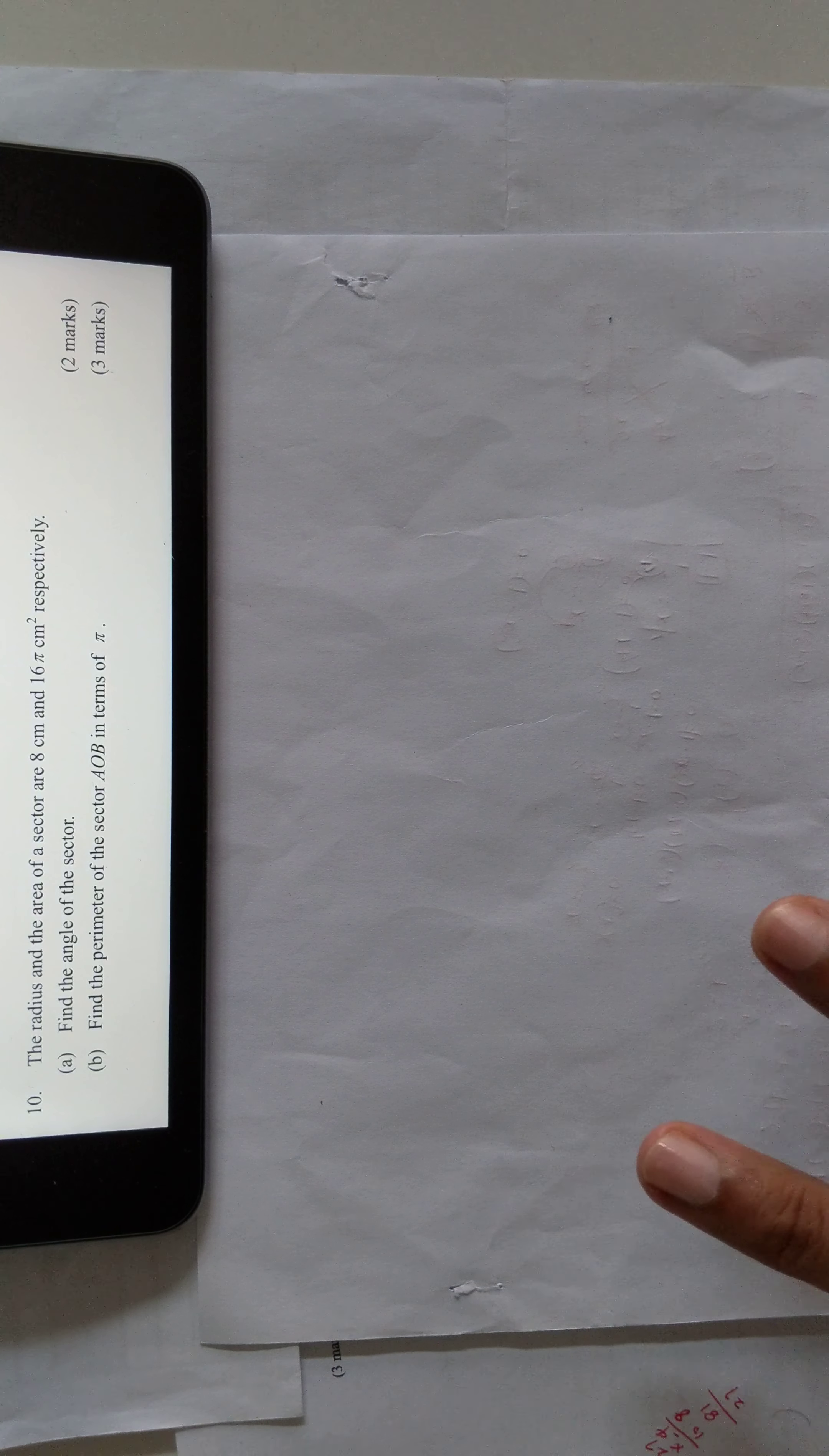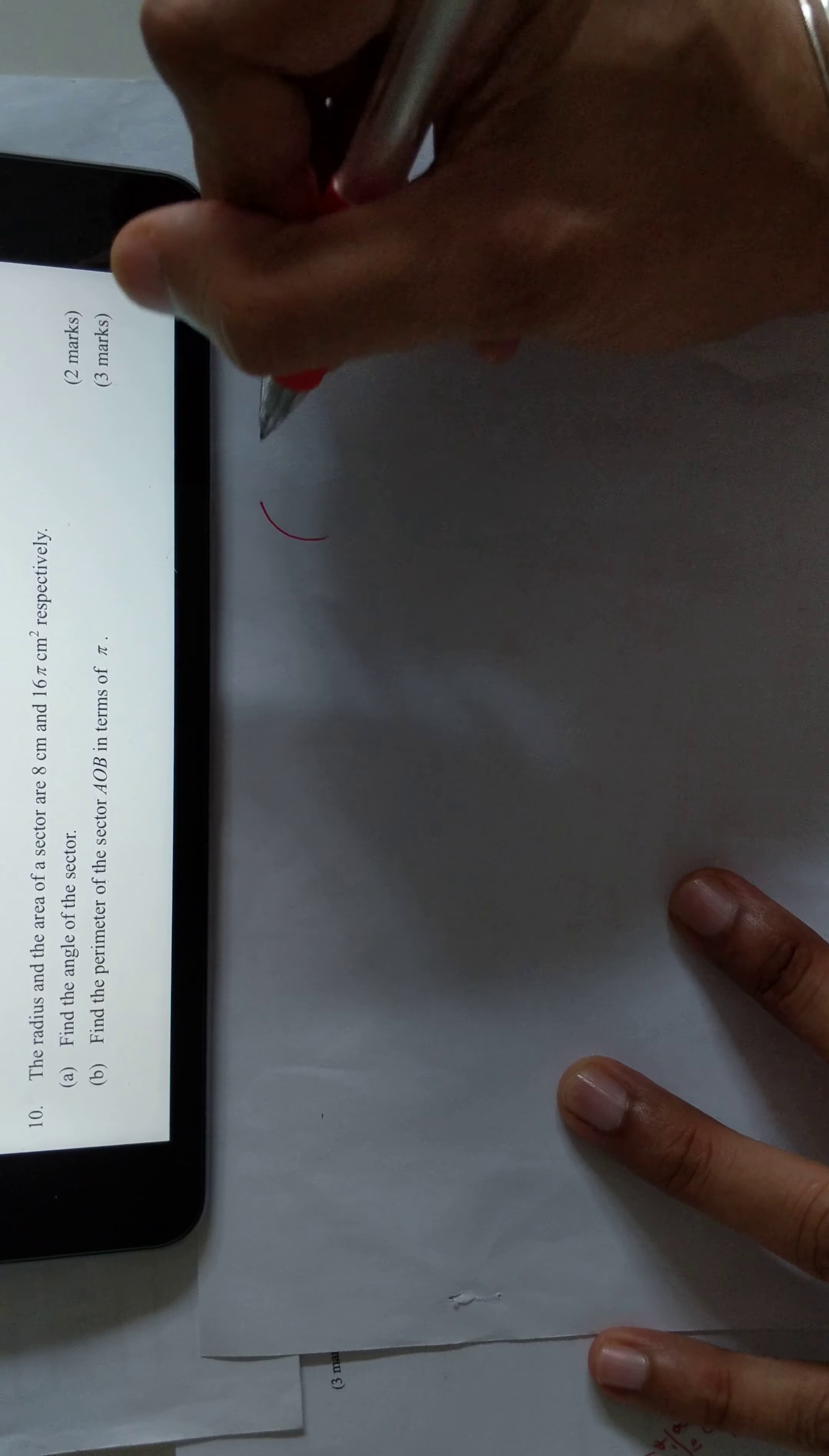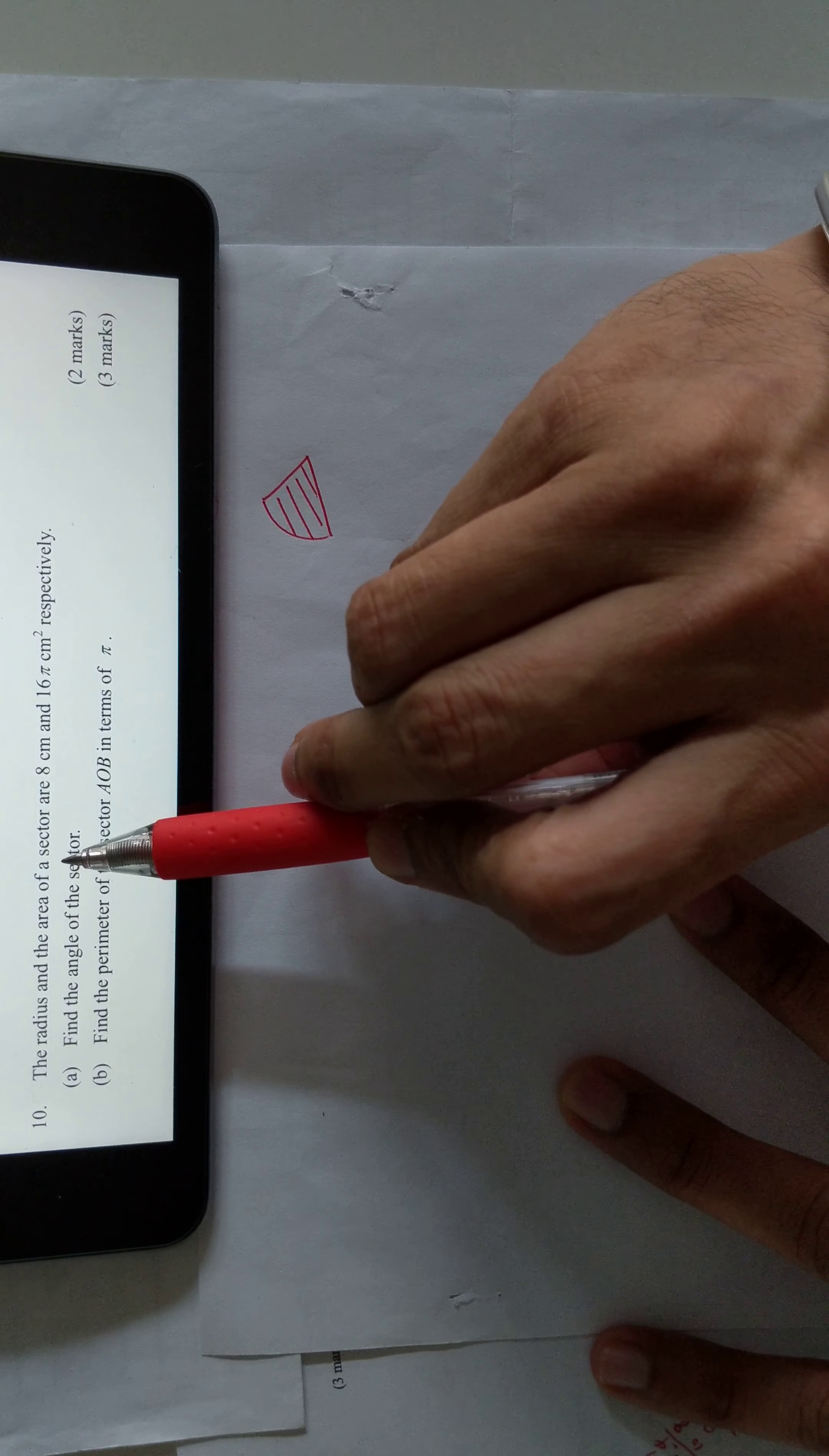Number 10 is a sector question. For a sector, you have area of sector and perimeter of sector. The perimeter includes the circumference and two radiuses. The area will be part of the whole circle. In this case, they gave us the area of a sector.